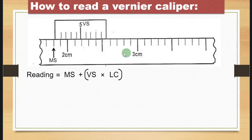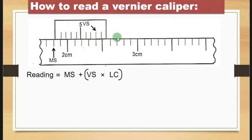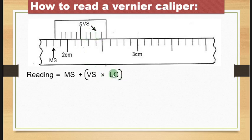The reading for the Vernier scale is read at the value where the arrow is pointing — this line which coincides with a line on the main scale at the bottom. The main scale has these lines here, and the Vernier scale also has these lines here. The point at which the lines on the Vernier scale and the main scale coincide is where the reading for the Vernier scale is taken. You can see that these two lines coincide to make a straight line.